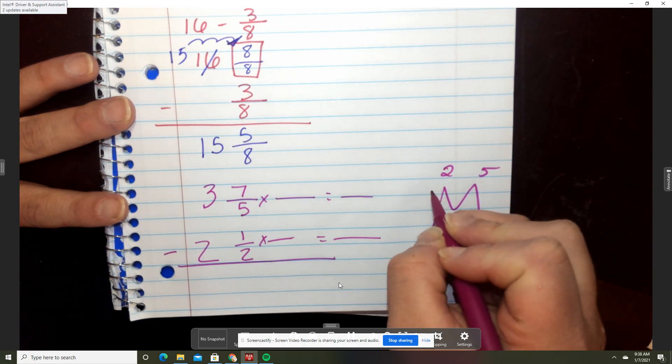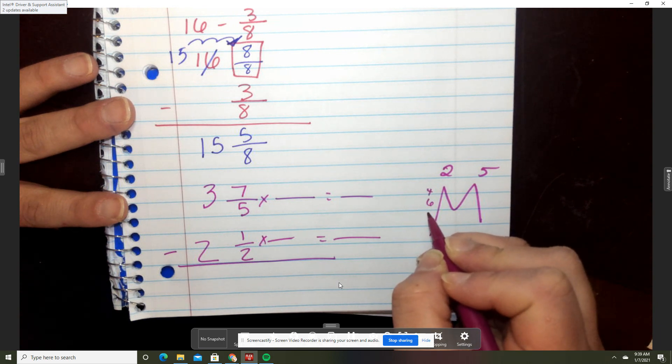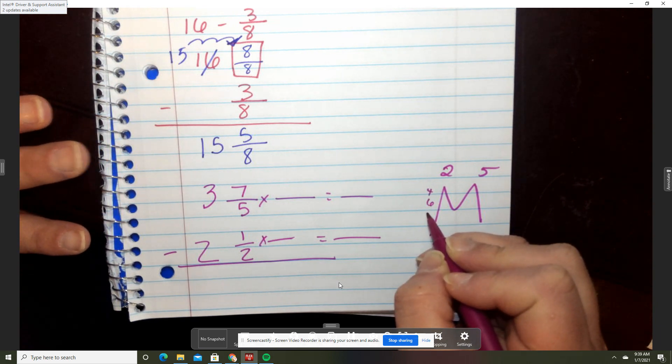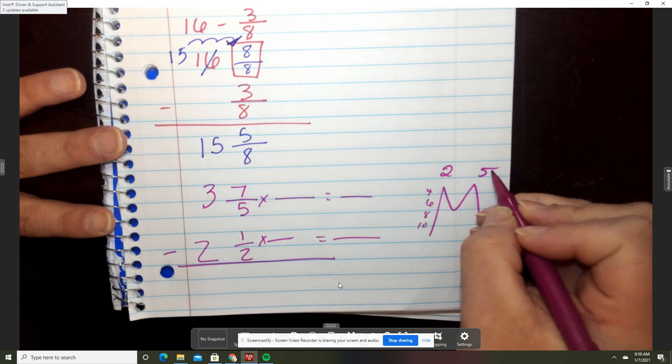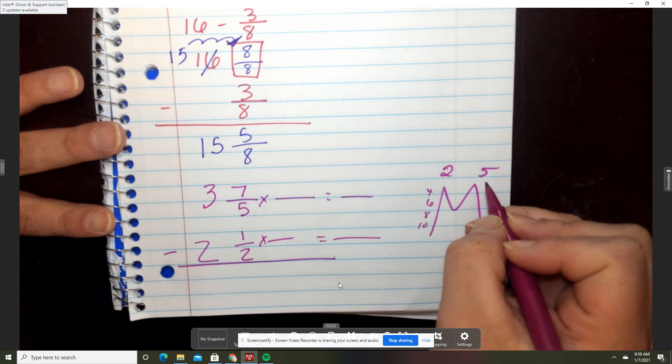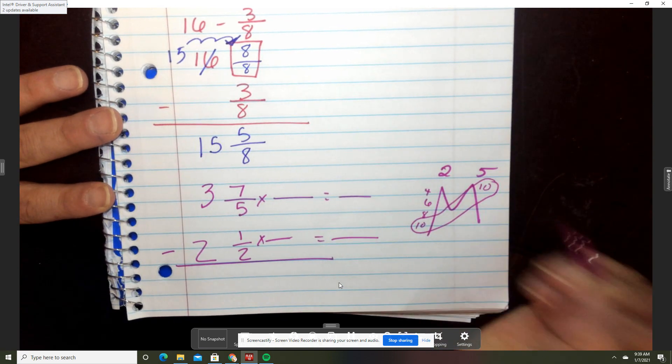Two times one is two. Two times two is four. Two times three is six. Two times four is eight. Two times five is ten. Five times one is five. Five times two is ten. So ten would be your common denominator.